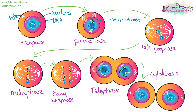In mitosis we go from one parent cell to two identical daughter cells. The first thing that needs to happen is that the DNA in the nucleus needs to condense into chromosomes, and then they need to line up down the middle. Once they're all lined up and checks are taking place to make sure the chromosomes aren't going to go astray, they can start to be pulled apart to either end of the cell. New nuclei will form and then they will separate into two identical daughter cells.